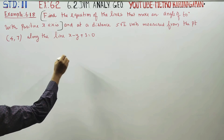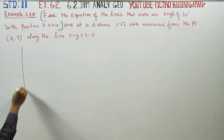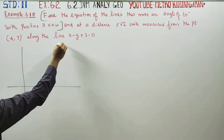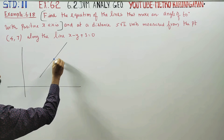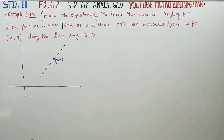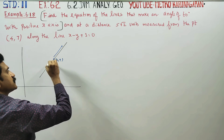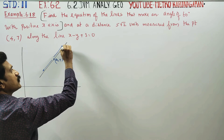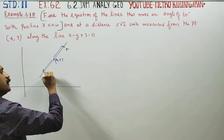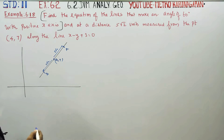This is the distance of 5 root 2 units measured from the point (4,7). There is one straight line, and on that straight line the point (4,7) is given. From (4,7), in one direction and the other direction, at 5 root 2 units distance, there are two points — call them point A and point B.